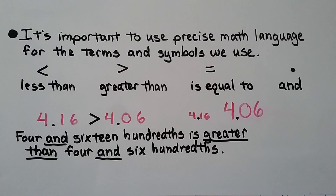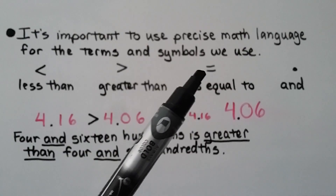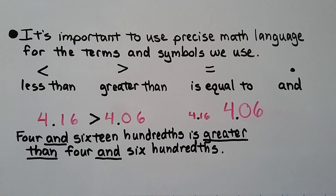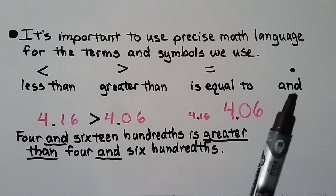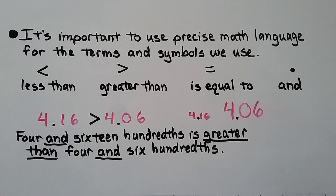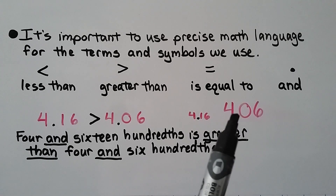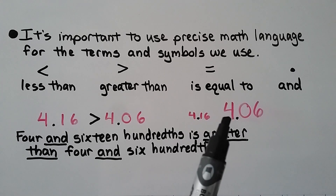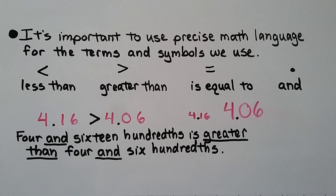It's important to use precise math language for the terms and symbols we use. Use 'less than', 'greater than', and 'equal to' — a decimal point is read as 'and'. So we say: 4 and sixteen hundredths is greater than 4 and six hundredths. Don't say 'bigger', because 'bigger' refers to physical size, not value. Make sure you say 'greater than' or 'less than'.